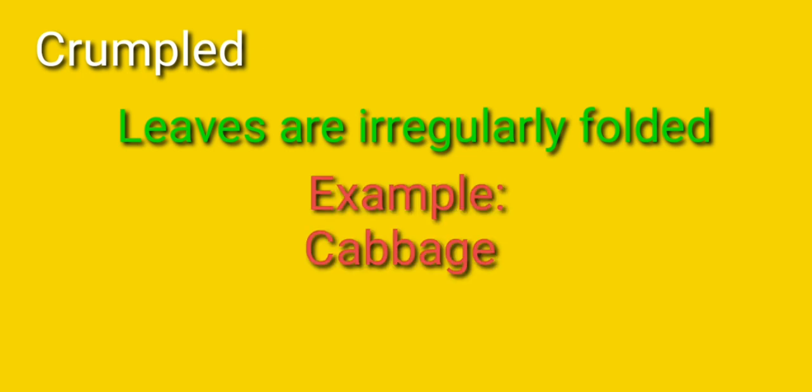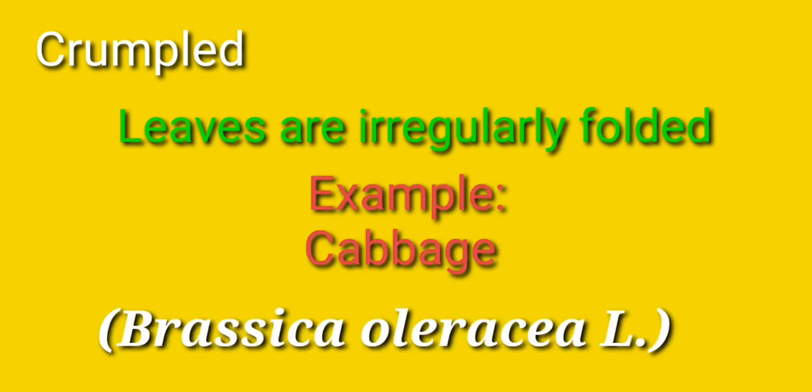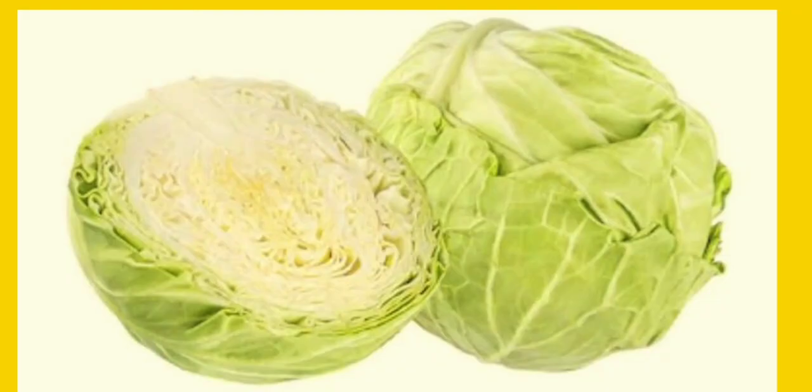The next one is crumpled. Here the leaves are irregularly folded. Example: cabbage, binomial name Brassica oleracea. This is the cabbage. You can find the irregular manner of leaf arrangement in a layer-wise fashion.